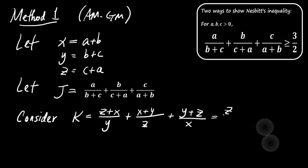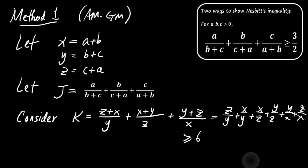Next, we apply the AM-GM inequality to each term in K. The AM-GM inequality tells us that the arithmetic mean of a set of non-negative numbers is greater than or equal to their geometric mean. K is greater than or equal to 6.